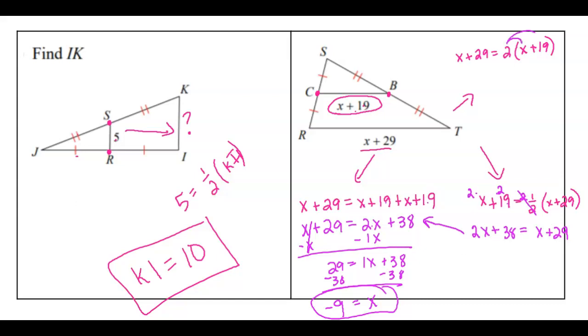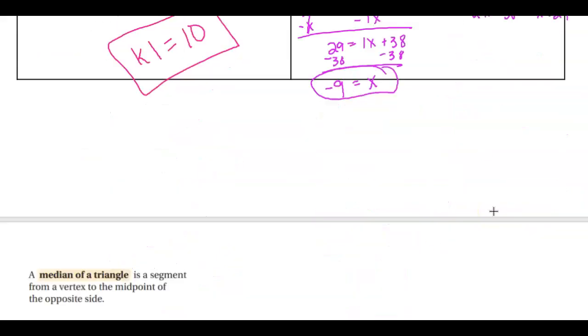On this example, I would distribute the 2. So X plus 29 is equal to 2 times X, 2 times 19. And we have that same equation again. So I would solve it all the same way. So either way, that's what we can do.